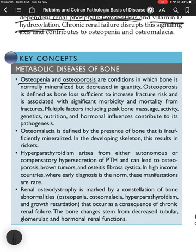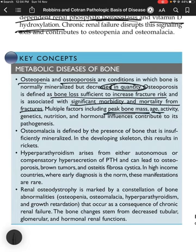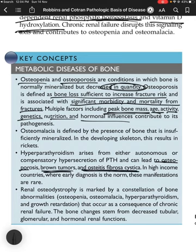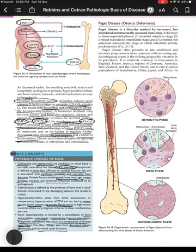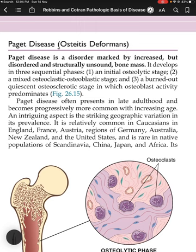Key concepts: Osteopenia and osteoporosis are conditions in which bone is normally mineralized but decreased in quantity; osteoporosis is defined as bone loss sufficient to increase fracture risk. Osteomalacia is defined by insufficiently mineralized bone — in the developing skeleton this results in rickets. Hyperparathyroidism from either autonomous or compensatory PTH hypersecretion can lead to osteoporosis, brown tumors, and osteitis fibrosa cystica — rare in high-income countries with early diagnosis. Renal osteodystrophy is a constellation of bone abnormalities resulting from chronic renal failure affecting tubular, glomerular, and hormonal renal functions.